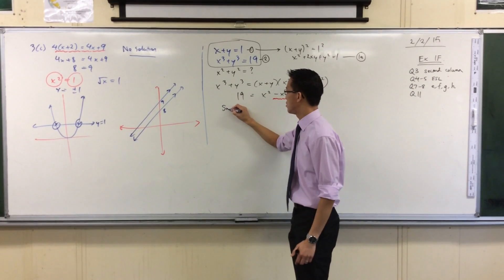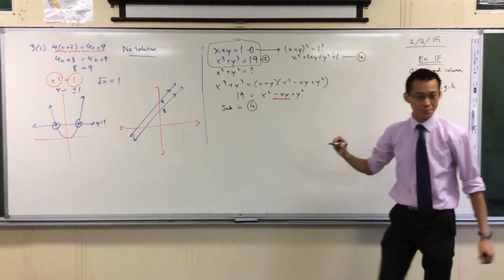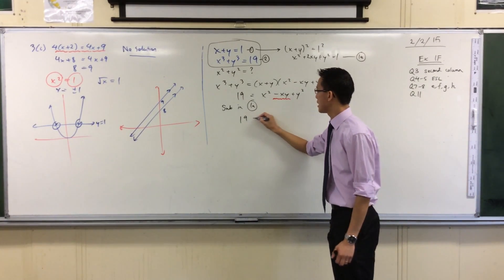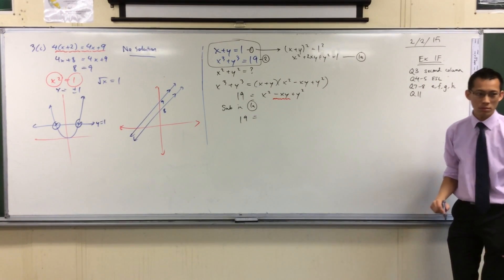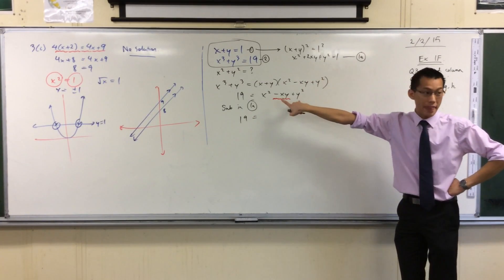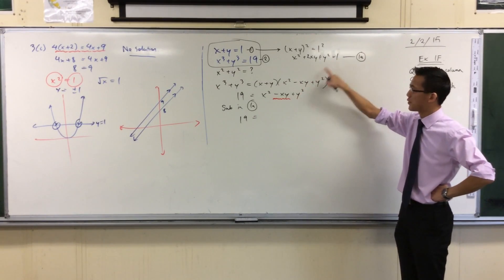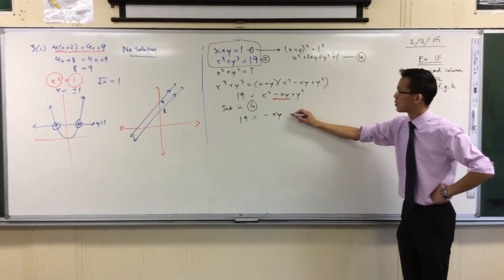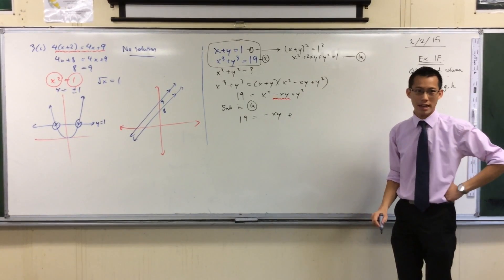So now I know I'm going to take this and I'm going to bring it down into here. Right? So I'm going to substitute in equation 1a. What's going to happen down here? This 19 is going to become equal to—think about it. I've got my x² and my y² there, right?